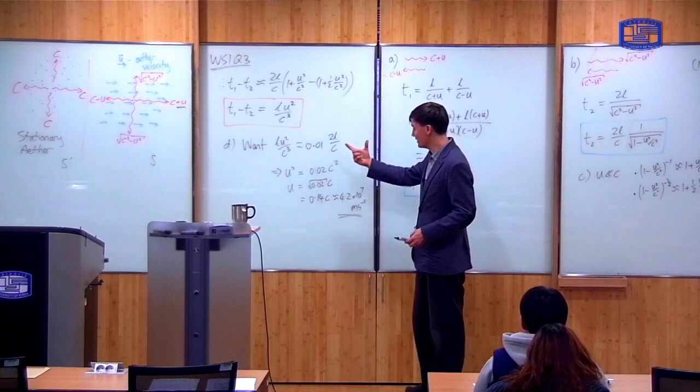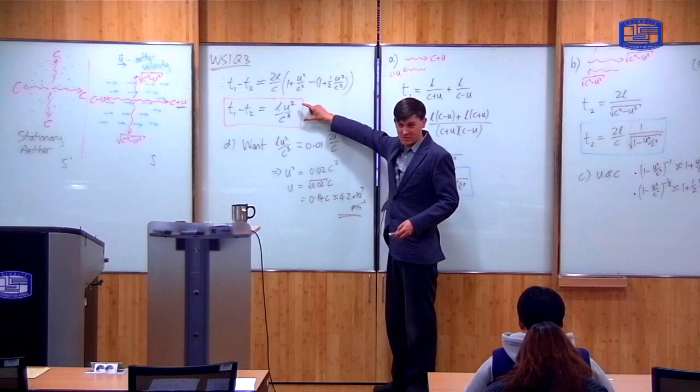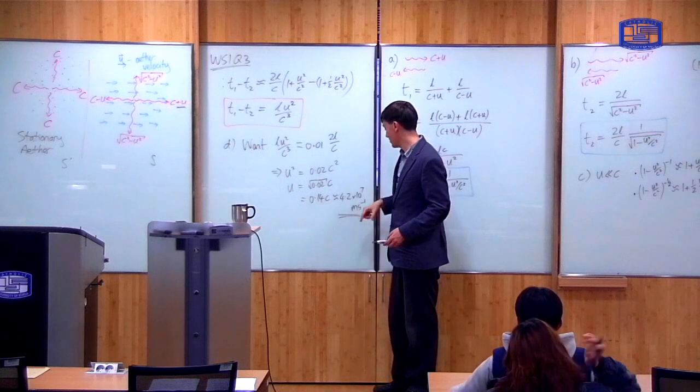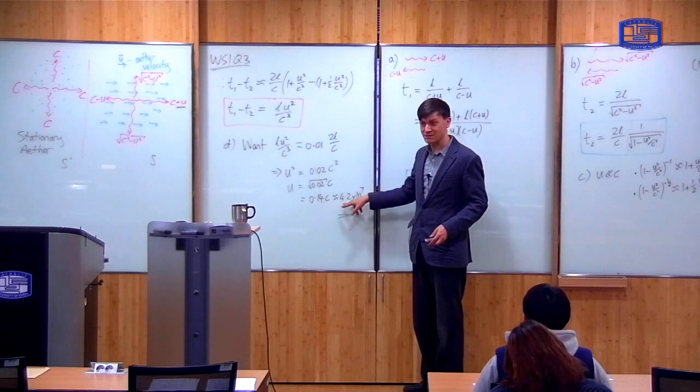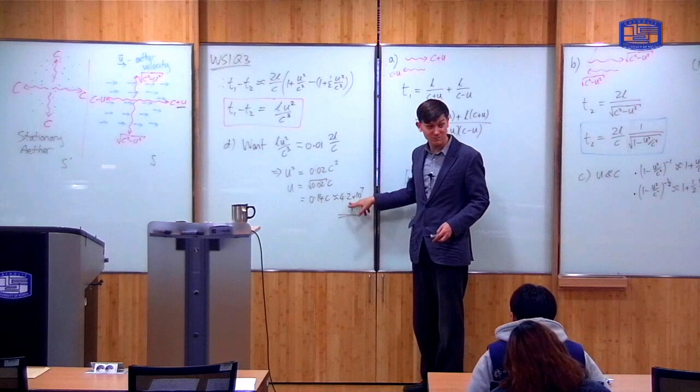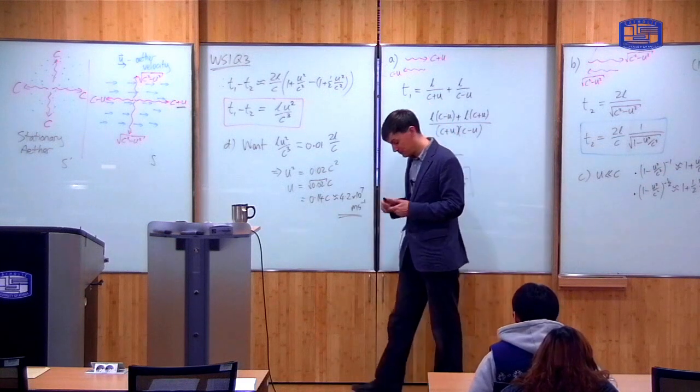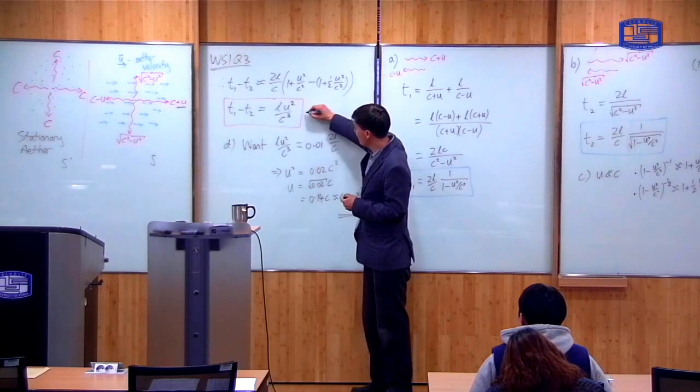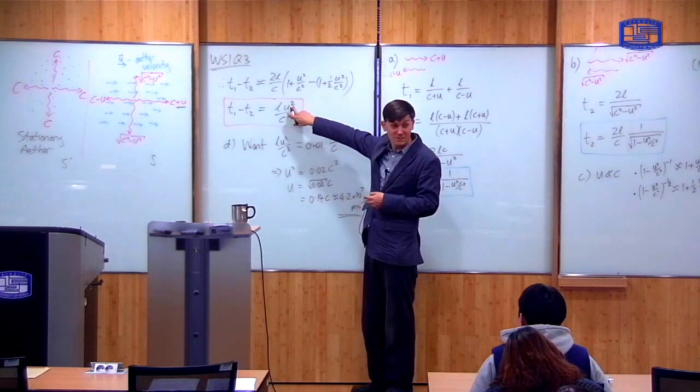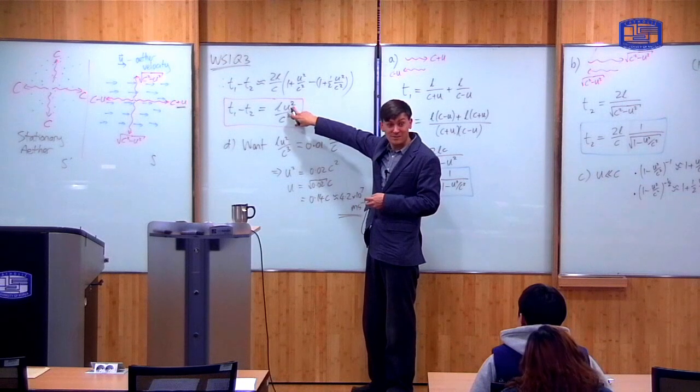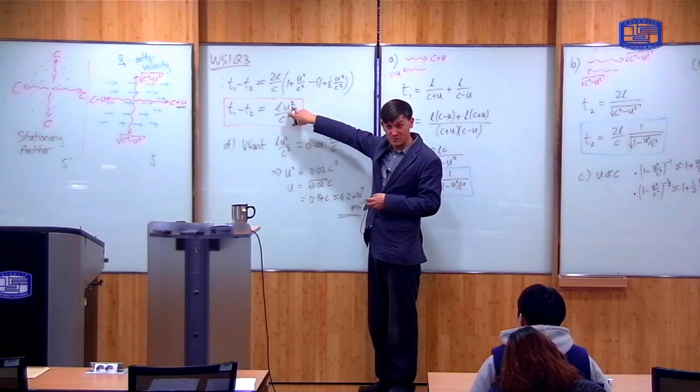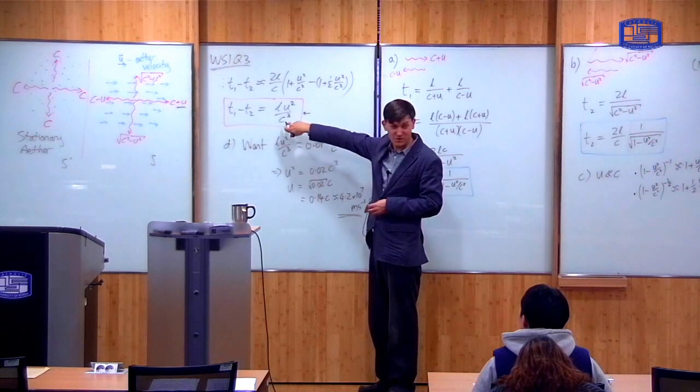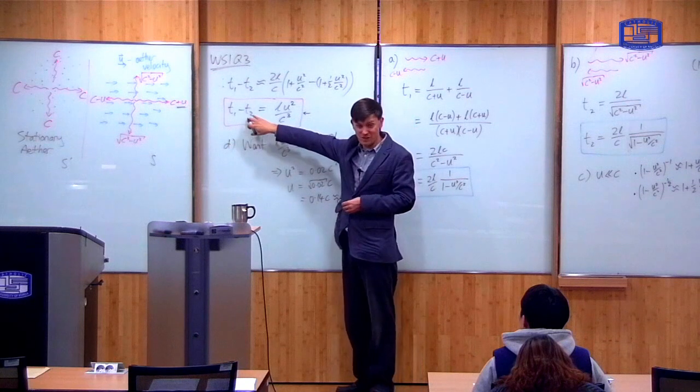So what this shows is that even to measure a very small amount of time difference, like this is a 1% time difference between this way and that way, you need to have a very large ether velocity. This is more than 10% the speed of light. So that looks quite forbidding. This time difference, if you measure this time difference, then you can use it to calculate the ether velocity. Because if you can measure this time difference, you can calculate U. But because C is so big and you've got a C cubed on the bottom, this time difference is incredibly small.